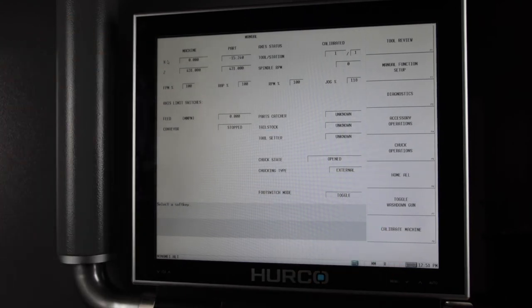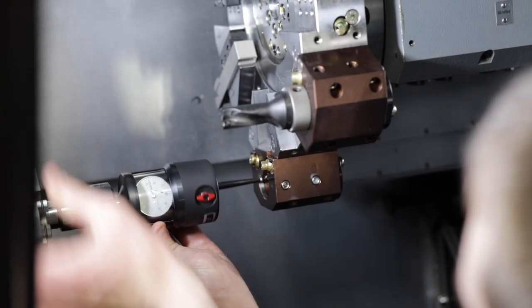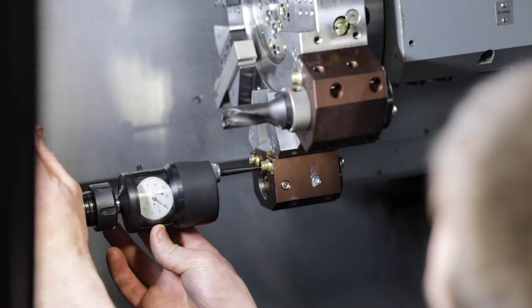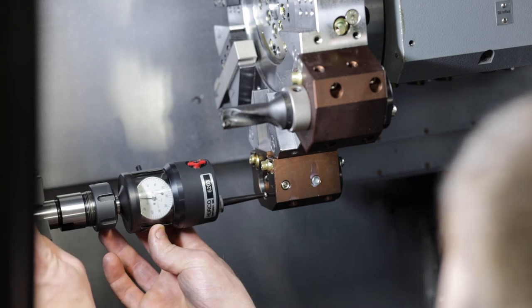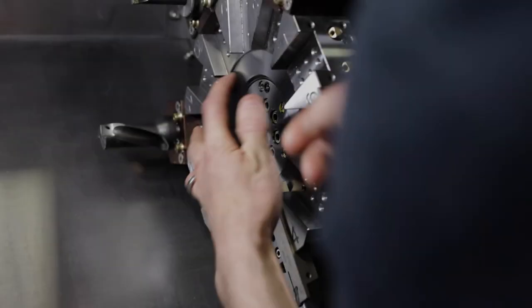After calibration, jog the machine down to x machine zero. Coax the boring block and ensure the parameter changed the location to the spindle center line.